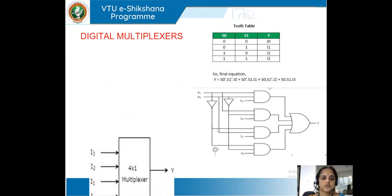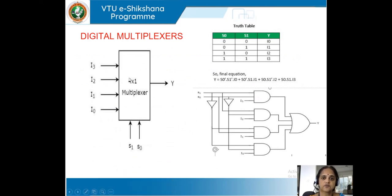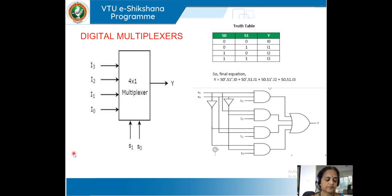Here is a block diagram of a 4-to-1 multiplexer. It has four inputs, one output, and select lines S1 and S0 to select one of the four outputs. Looking at the truth table: when both select inputs are low, Y has the value of I0; when it is 01, Y has the value of I1; when 10, the value of I2; and when both are 1, the value of I3.